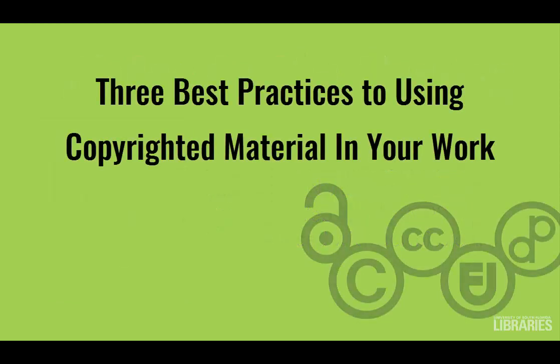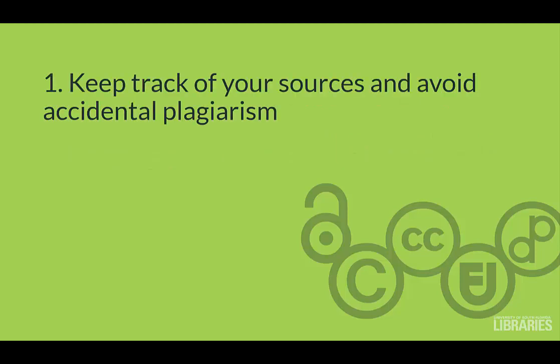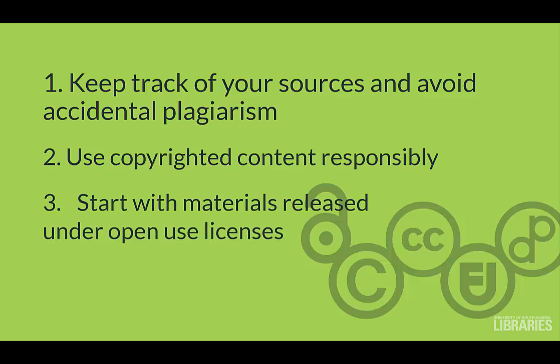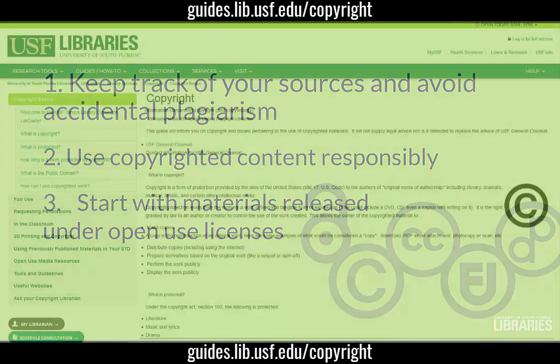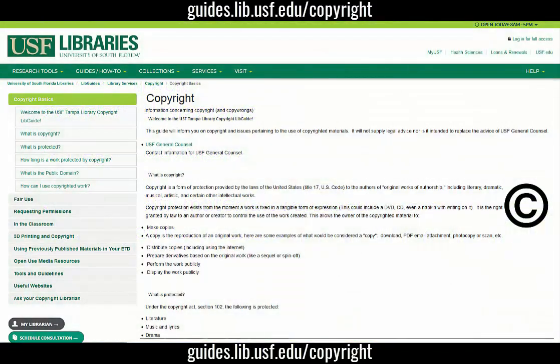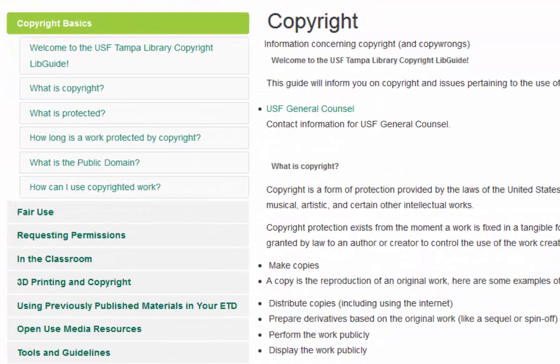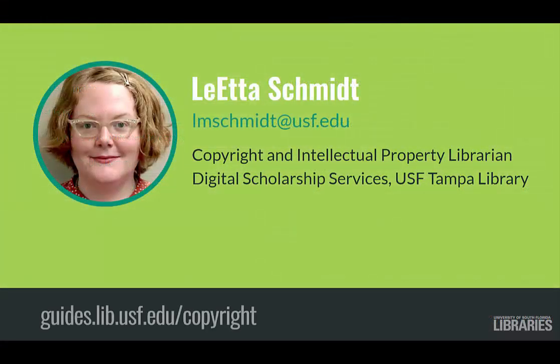In this video, we've covered three best practices to using copyrighted material in your work. One: keep track of your sources from the beginning to avoid accidental plagiarism. Two: always use copyrighted material responsibly. And three: start with materials that are released under open use licenses by the author or creator. But we've only addressed a small amount of circumstances in which you may end up using copyrighted content. For those other uses, the Library hosts a guide to help address more in-depth questions on copyright and use of copyrighted material. And you can always contact your copyright librarian for help.